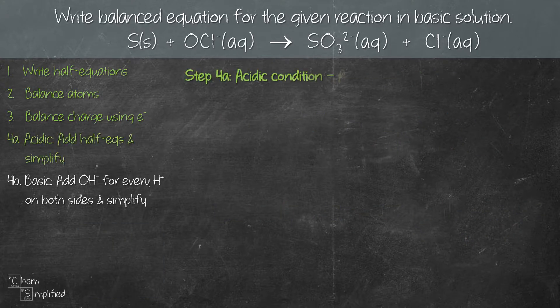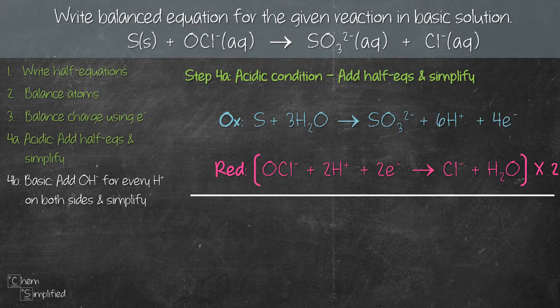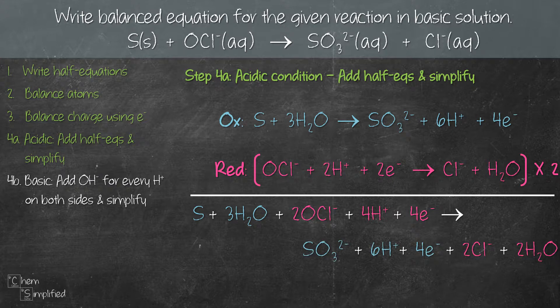Now let's add up both equations to give us the balanced equation in acidic condition. From oxidation we have S + 3 H₂O; from reduction (multiplied by 2) we have 2 OCl⁻ + 4 H⁺ + 4 electrons. On the right-hand side we have SO₃²⁻ + 6 H⁺ + 4 electrons from oxidation, and 2 Cl⁻ + 2 H₂O from reduction. Let's simplify: we have 3 H₂O on the left and 2 H₂O on the right, so we're left with 1 H₂O on the left-hand side.